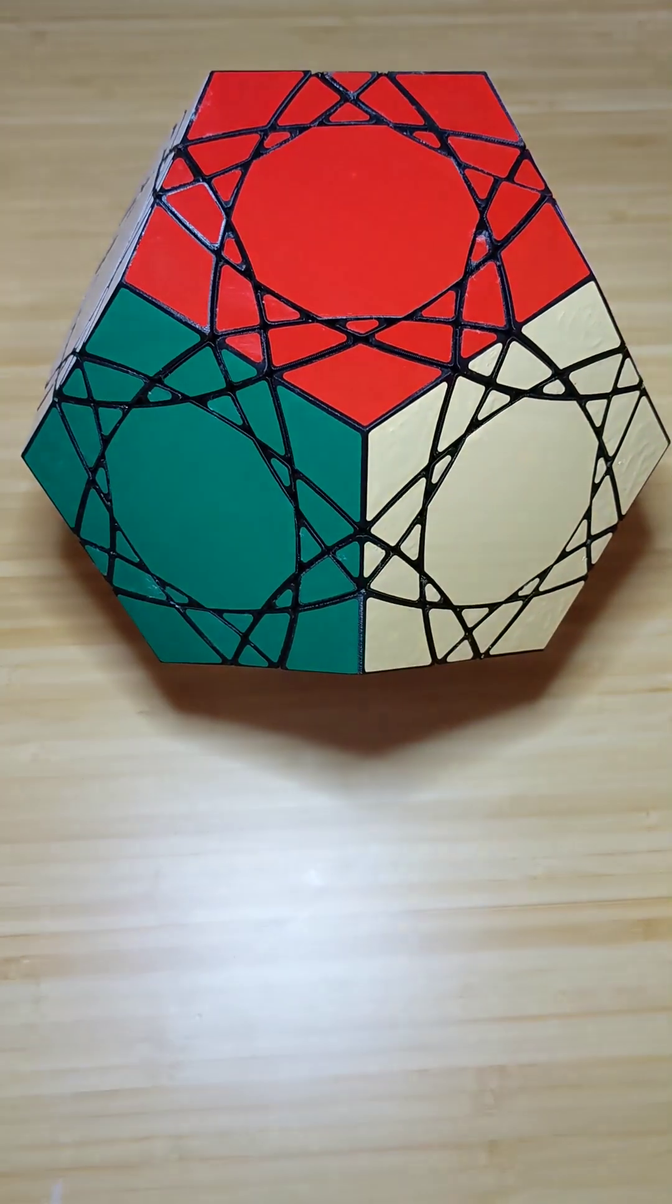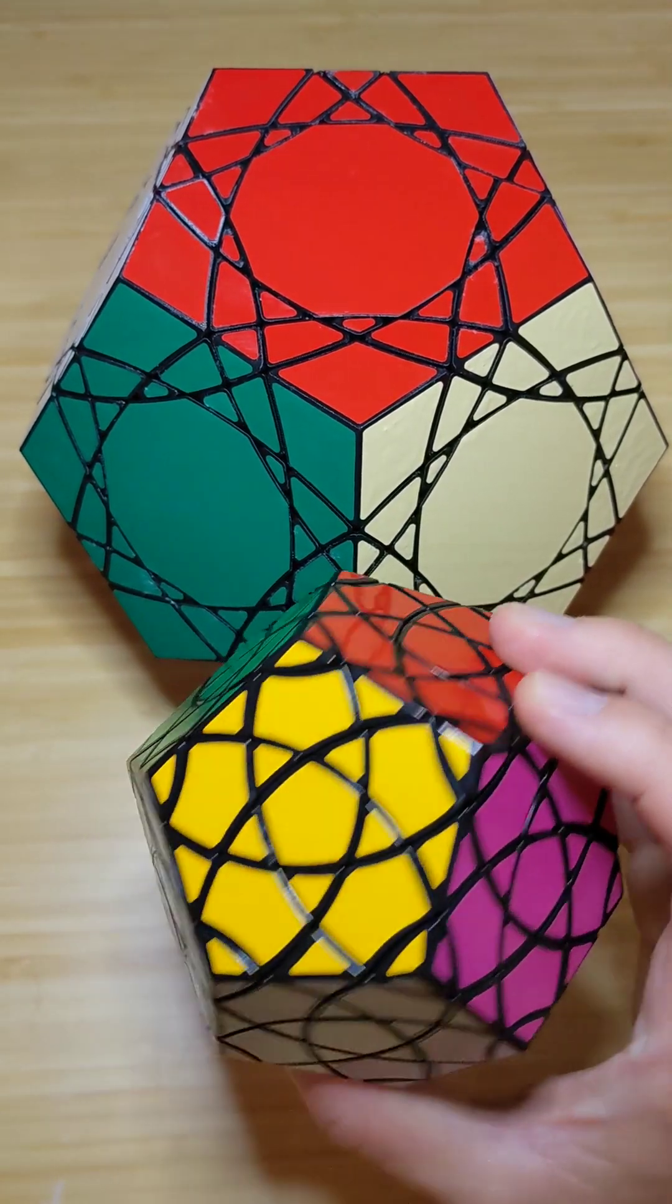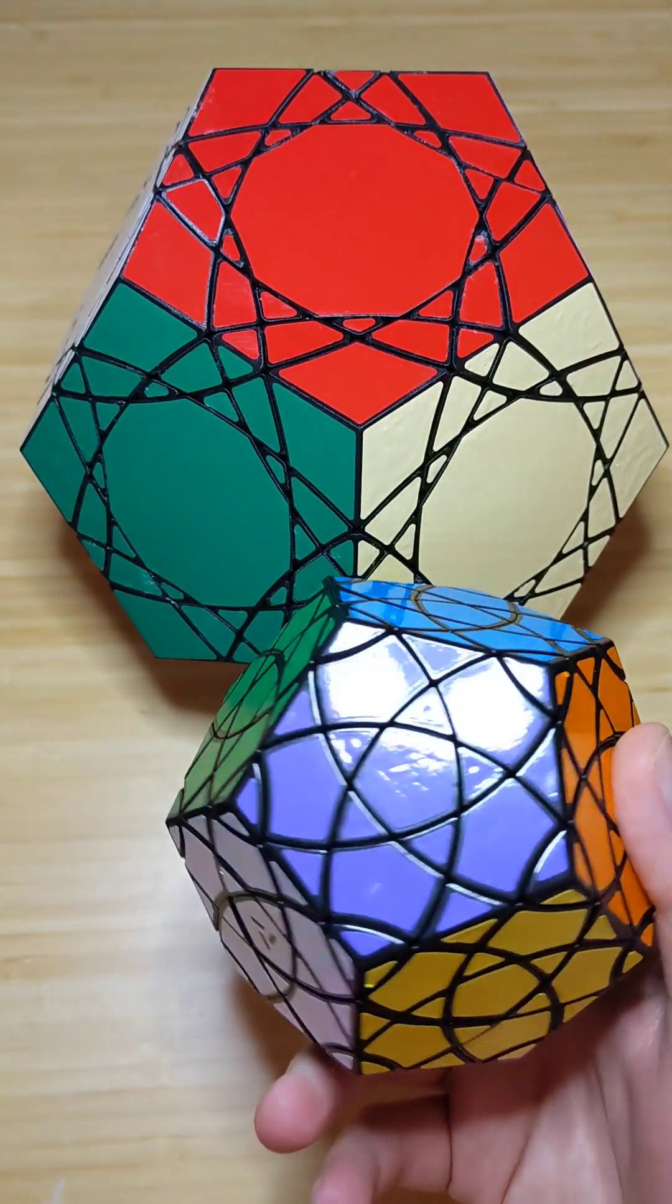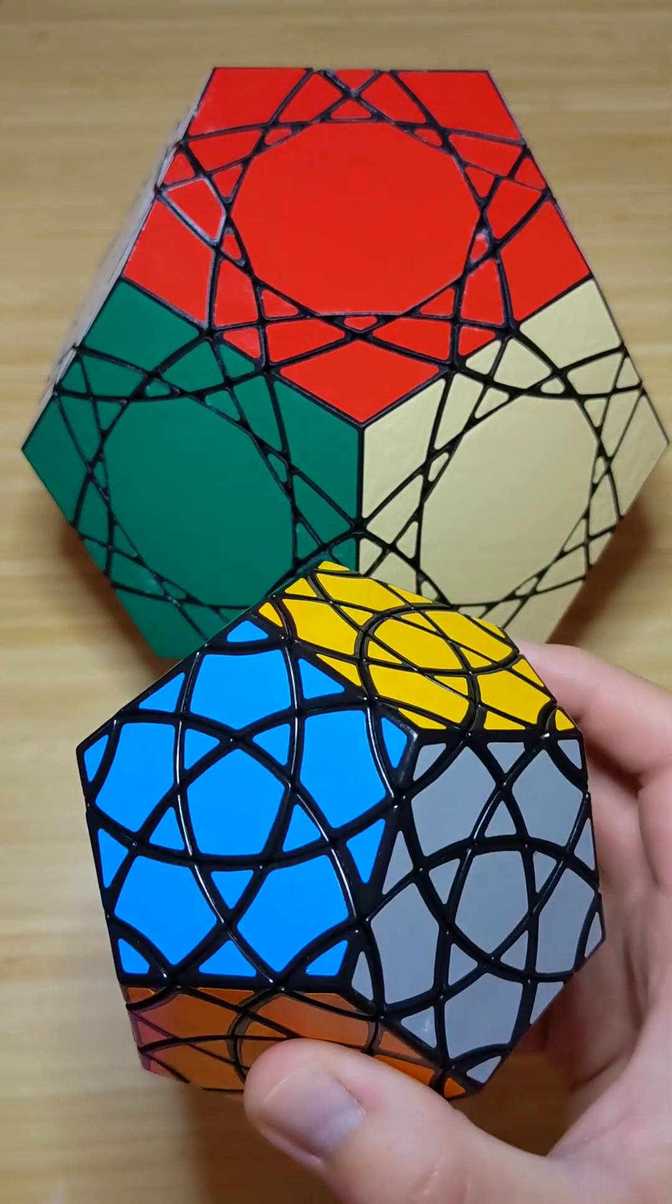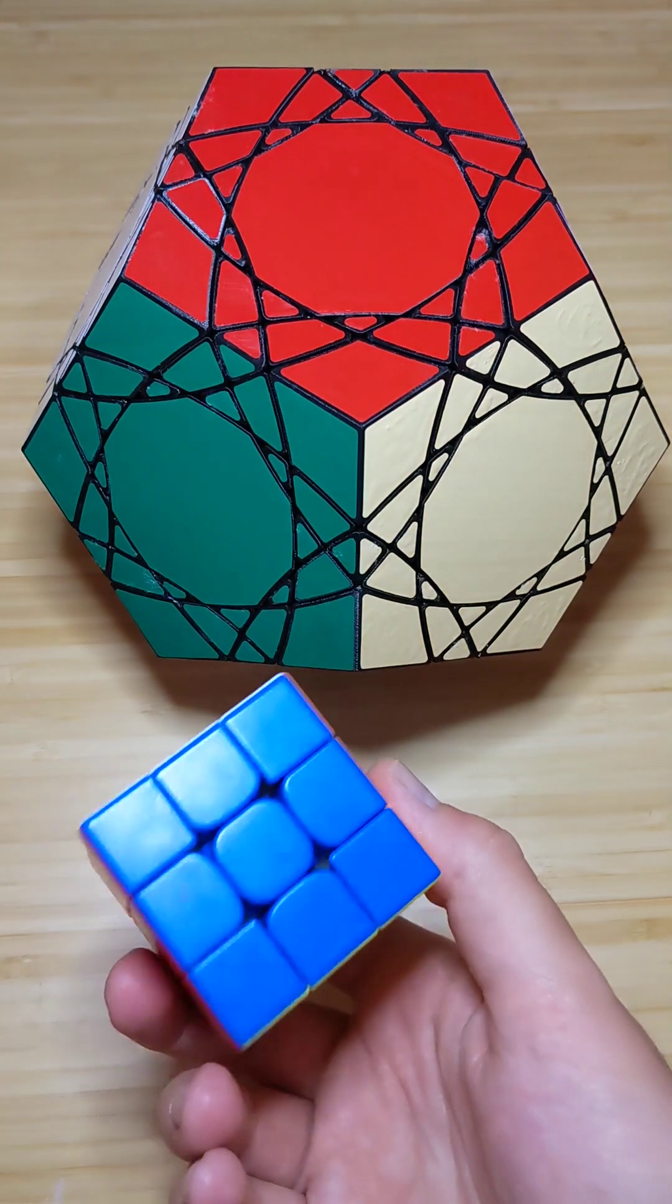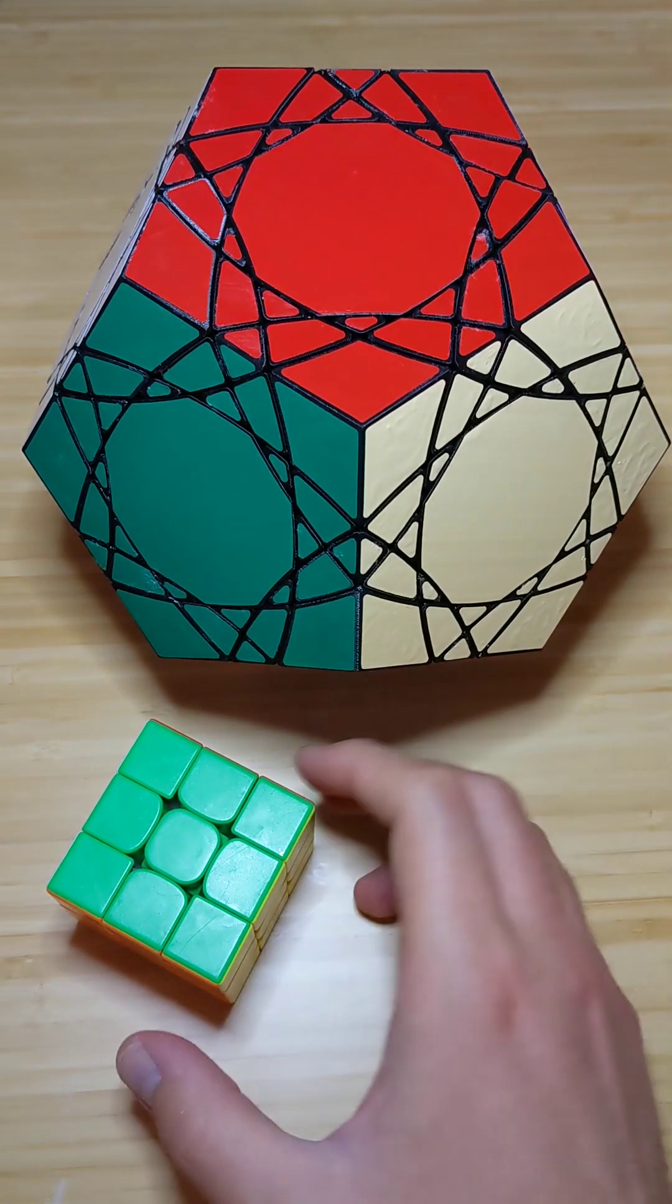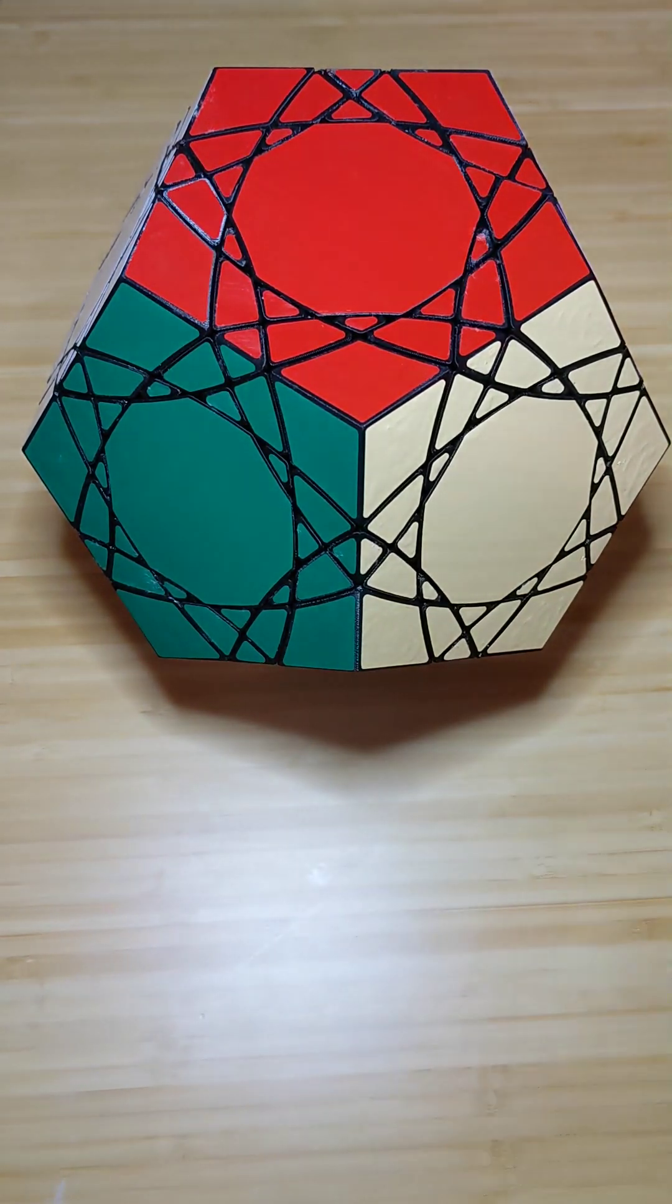So, here is the MF8 Radio 3 Dodecahedron. It's also called the Bohemia Dodecahedron 2, for comparison. And then, here is a Moyu RS3M, just a standard 3x3. It's big.